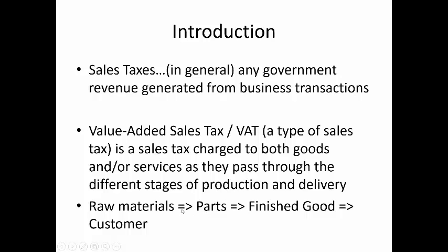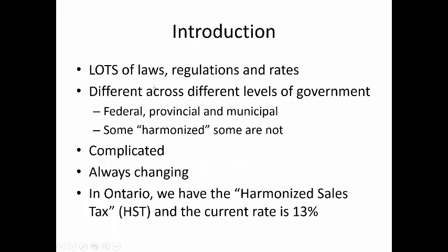So when a parts company buys raw materials from their suppliers, they pay the suppliers the taxes. When the finished goods companies buy parts from suppliers, they pay taxes on those parts. When we, as the consumer, buy a finished good, we pay the tax on the finished good. There are lots of laws and regulations and rates, and depending on what province you're in, what level of production you're in, what kind of good or market you're in, all of these factors can have different related laws and rates applied to them. The laws and rates are also always changing.